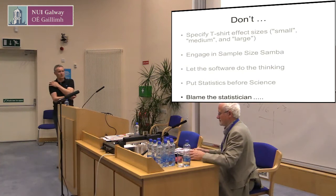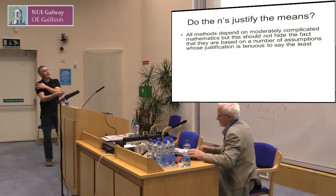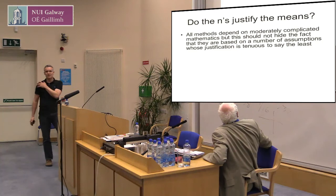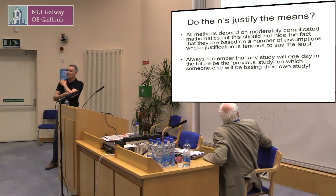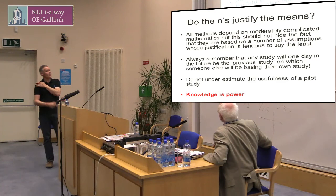So the final point: the ends justify the means. All methods depend on complicated mathematics that hide the assumptions — assumptions whose justification is tenuous, to say the least. This is the circular argument. Remember that any study you carry out will in future be somebody else's study that they're going to use this information for — you're going to have to share that information. Make sure you represent whatever summary statistic somebody else might need and give it to them. Don't underestimate the usefulness of a pilot study. Knowledge is power. Thank you.